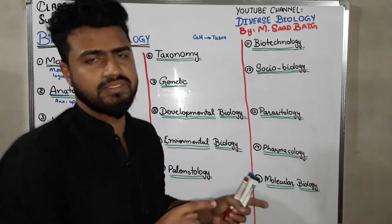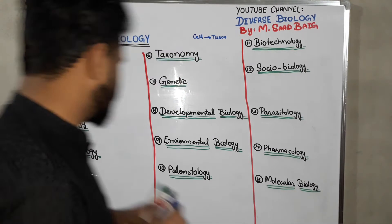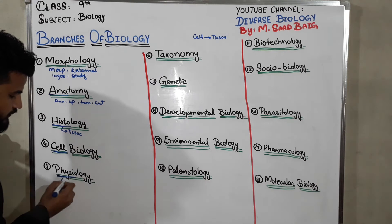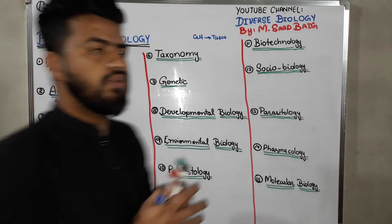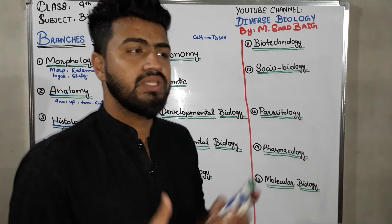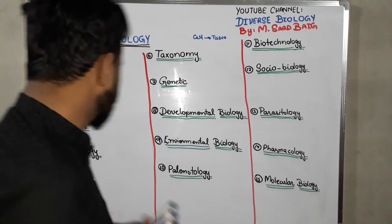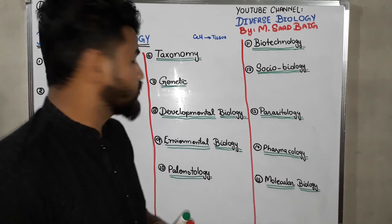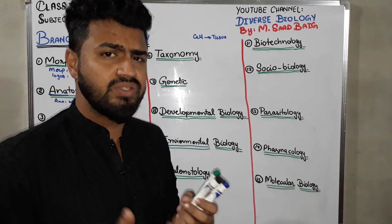Next we have physiology. 'Physio' means function — the function of any organ. How any organ inside a body is functioning, or what function it is performing — the study of that is known as physiology. So the definition of physiology is: the study about the function of organs is known as physiology.